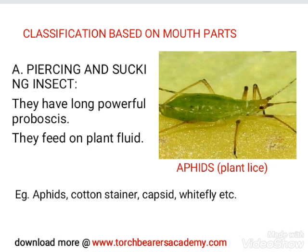Piercing and sucking insects have what we call a proboscis — needle-like and used for penetrating and sucking. They feed on cell sap. Examples include aphids, capsids, cotton stainer, scale insects, and whitefly.